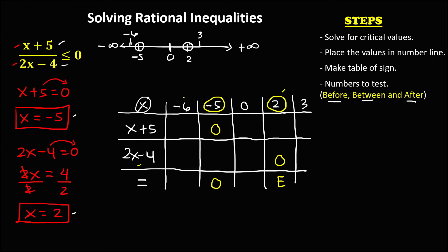For x equals negative 6: in the numerator, negative 6 plus 5 is negative 1, so the sign is negative. In the denominator, 2 times negative 6 is negative 12, and negative 12 minus 4 is negative 16, so the sign is also negative. Negative divided by negative gives a positive result.